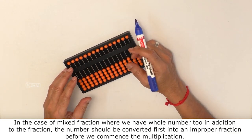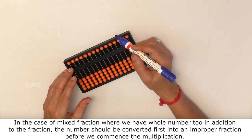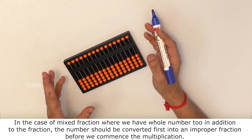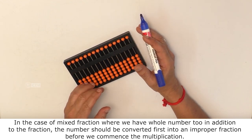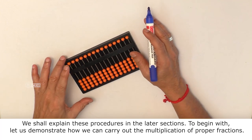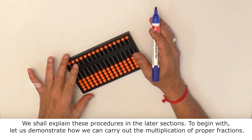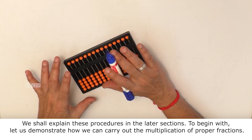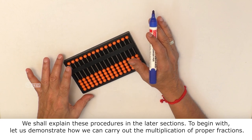In the case of a mixed fraction, where we have whole number too in addition to the fraction, the number should be converted first into an improper fraction before we commence the multiplication. We shall explain these procedures in the later sections. To begin with, let us demonstrate how we can carry out the multiplication of proper fractions.